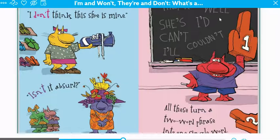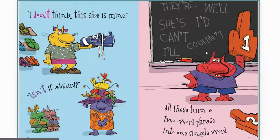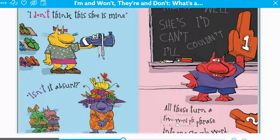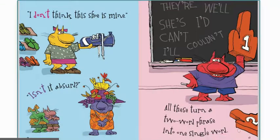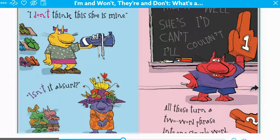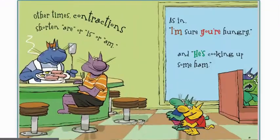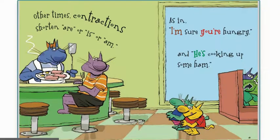There, she's, I'd, can't, couldn't, I'll — they all turn a two-word phrase into one single word. Other times contractions shorten 'are,' 'is,' or 'am,' as in 'I'm sure you're hungry and he's cooking up some ham.'